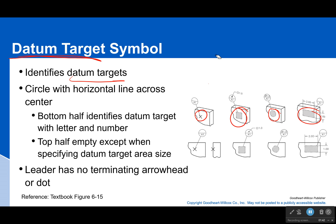Now we have to look at our datum target symbol. It's a circle with a line through it. At the top you will possibly have another symbol which says what the shape is — it might be a square, like a one inch wide square, or maybe it's a circle, so give the diameter symbol. If you don't give anything, it's either going to be a point or an area, and if it's an area you better show your dimensions.